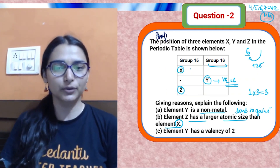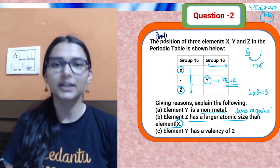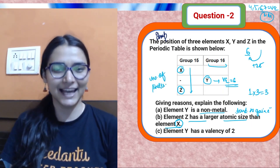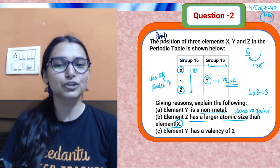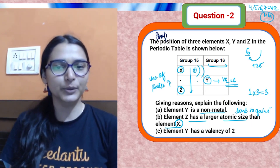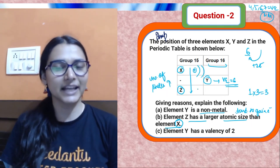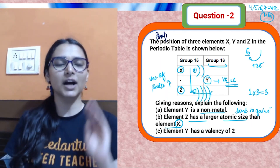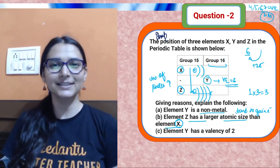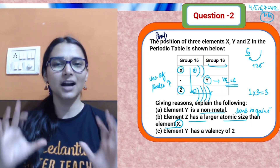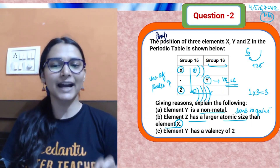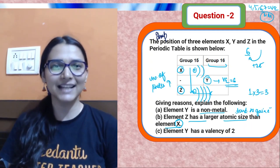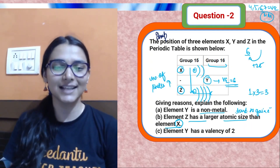Part two: element Z has a larger atomic size than element X. Going top to bottom in a group, the number of shells increases. If X is from the second period it has two shells; a third-period element has three shells; if Z is from the fourth period it has four shells. The valence electron goes farther from the nucleus, so overall atomic size increases down a group.